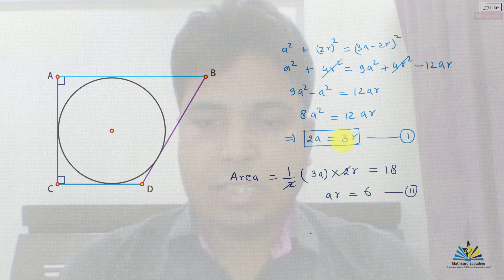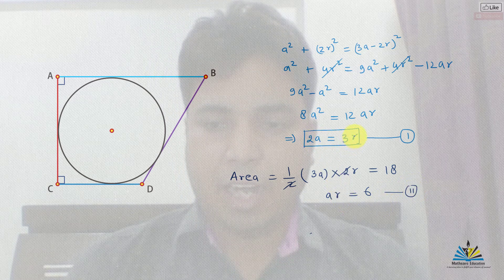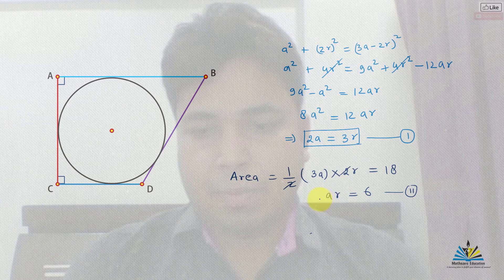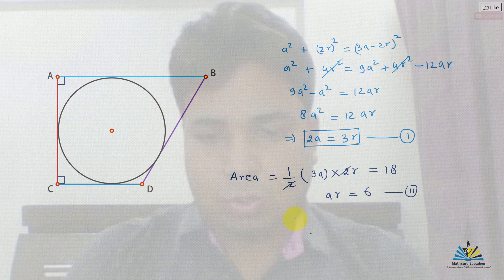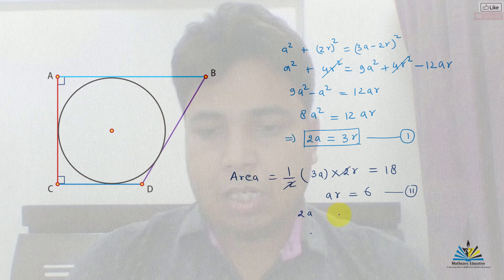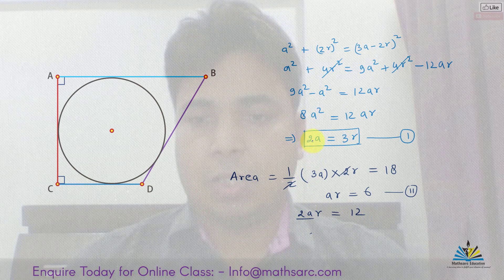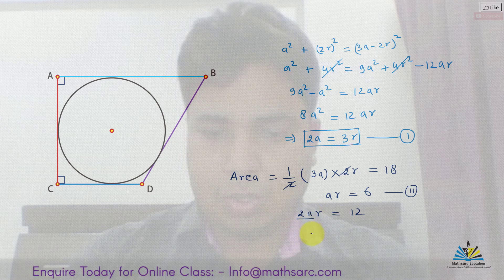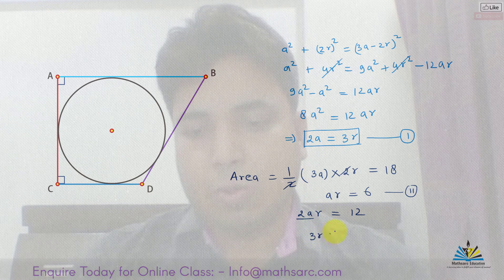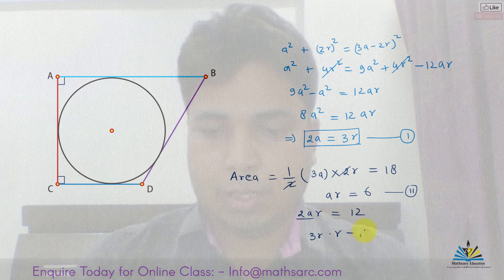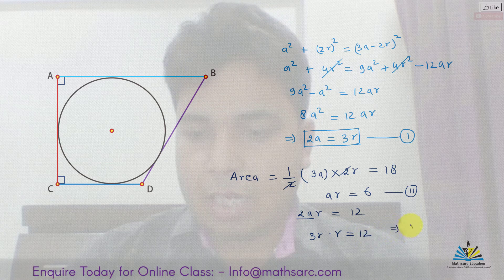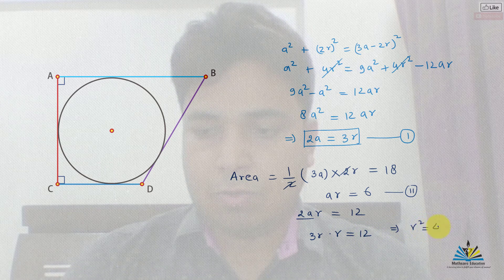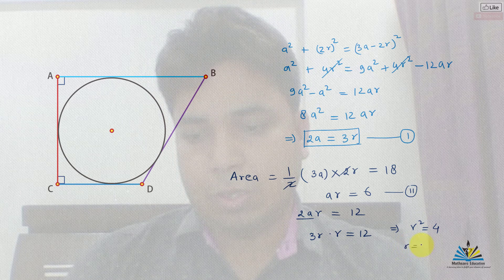We know that 2a equals 3R and we need to find R. Multiplying the second result by 2, we get 2AR equals 12. Replacing 2a with 3R, we get 3R times R equals 12. This means R squared equals 4. Hence, R equals 2.